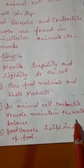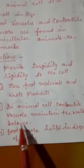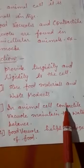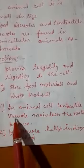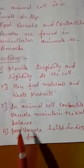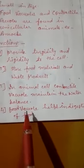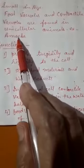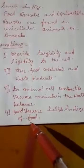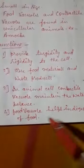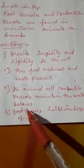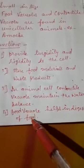In animal cells, contractile vacuoles maintain water balance — they regulate the amount of water in unicellular organisms. Food vacuoles help in the digestion of food, as seen in amoeba, where food vacuoles carry digestive enzymes that help in digestion.